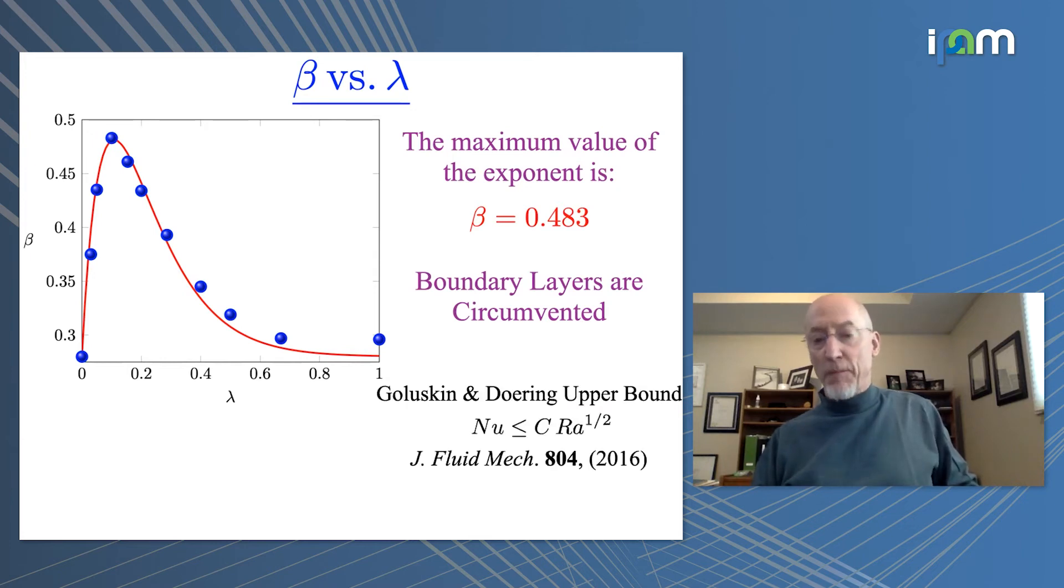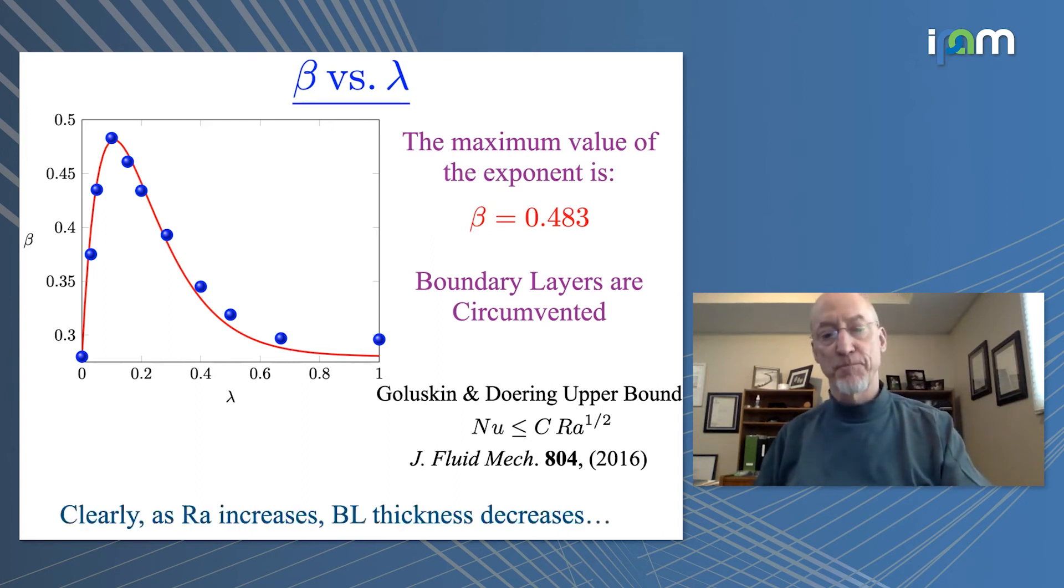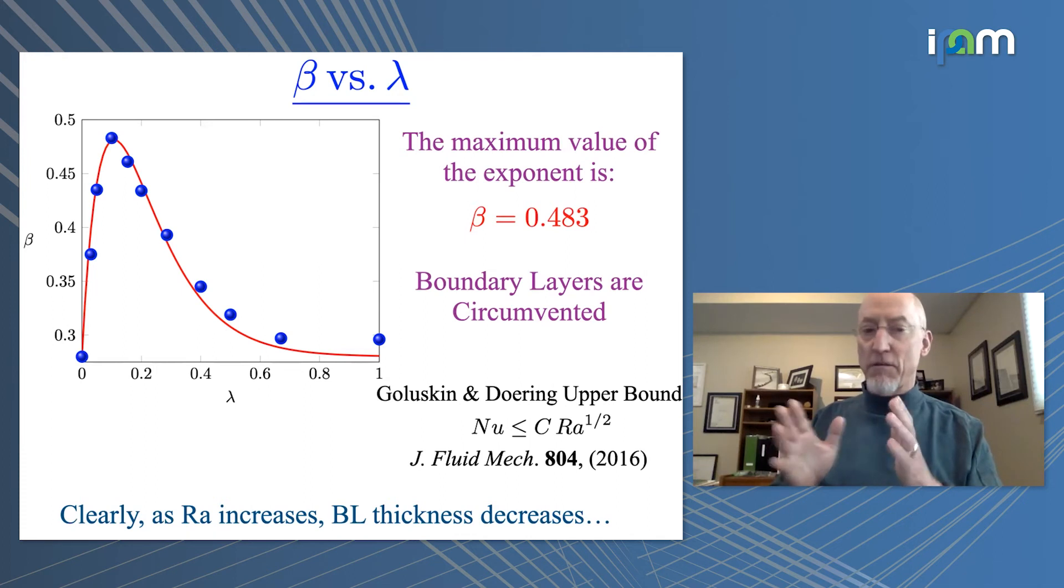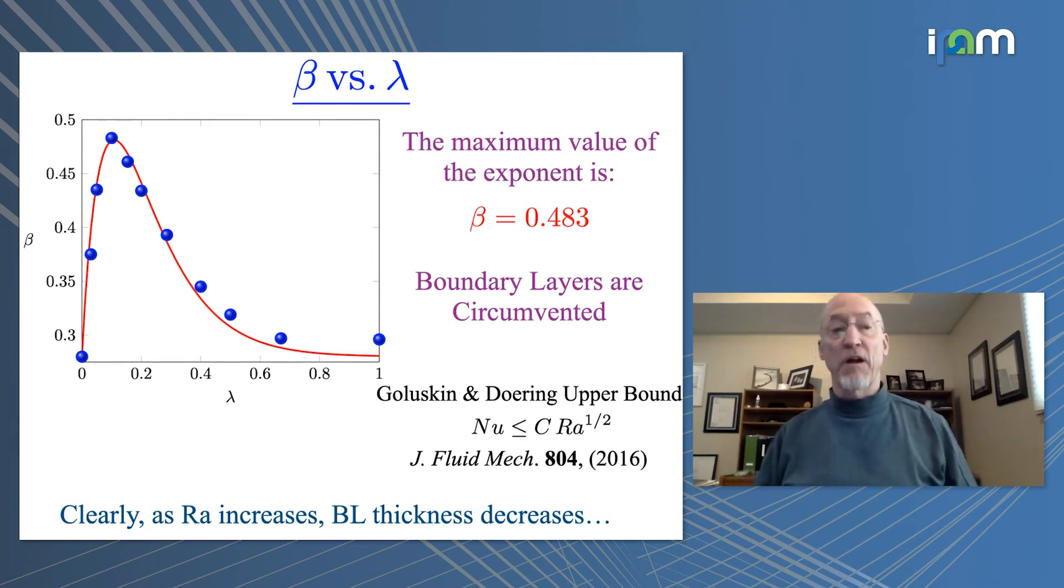I just want to remind people, if they weren't aware of this paper by David and Charlie, which determines this upper bound, where the constant depends on the details of the geometry. So that having been said, clearly, as you continue to increase the Rayleigh number, the boundary layer thickness is going to get thinner and thinner and thinner. And so to deal with this variation in boundary layer thickness, one thinks about another way, maybe a non-periodic way, to manipulate the interaction I've been discussing.